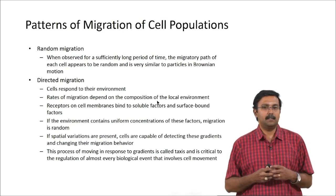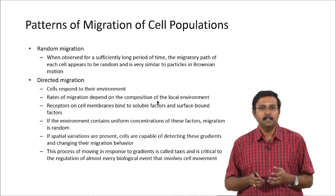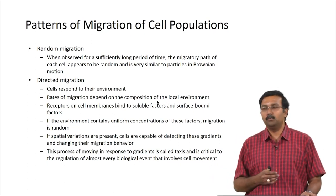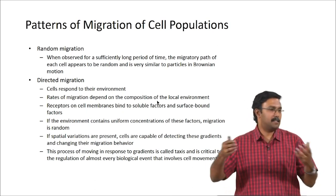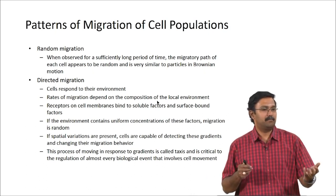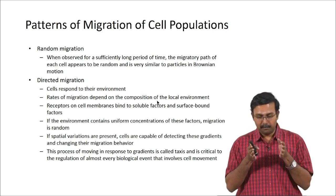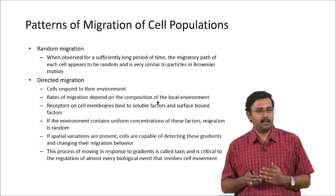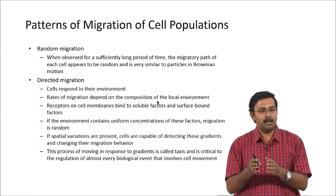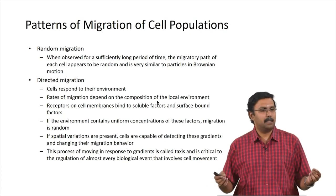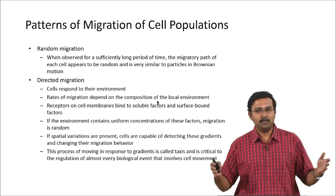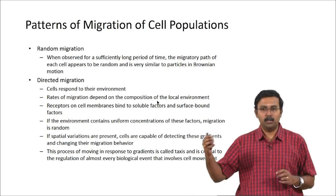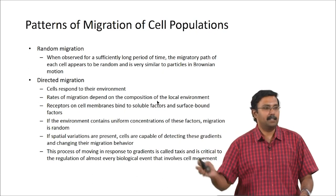There are two major types of migration: random migration and directed migration. Random migration is observed when you look at a sufficiently long period of time. For example, if the persistence time for endothelial cells is 300 minutes but your observation period is only 150 minutes, you will think cells are moving only in one direction. If you observe a very large number of cells for 3000 minutes, different cells will keep moving in different directions — it will clearly appear to be random migration, assuming no signal is directing the migration.